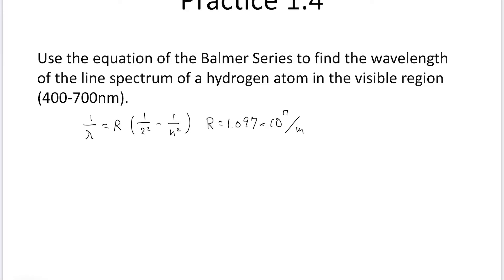From this equation, you can find the expression for lambda is 1 over R times 1 over 2 squared minus 1 over n squared.